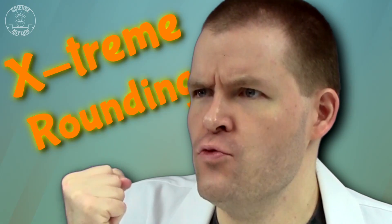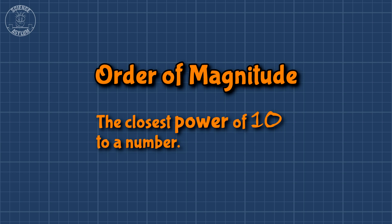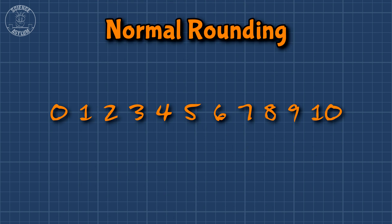Are you just going to geek out about numbers for five minutes? Okay, I'll get to the point. As it turns out, we can say every number has an order of magnitude. Think of it like... EXTREME ROUNDING! It's whatever power of 10 is closest to that number. But the word 'closest' doesn't always mean what you think it means. With normal rounding, 5 is the halfway marker.